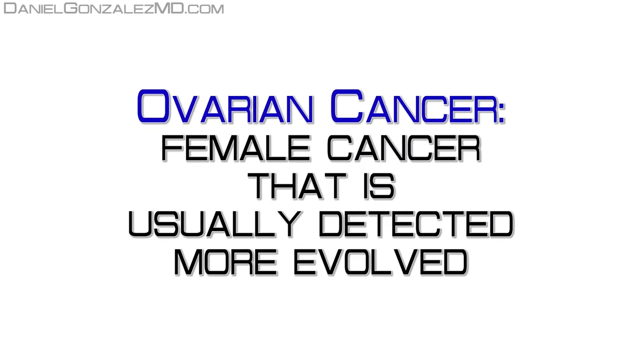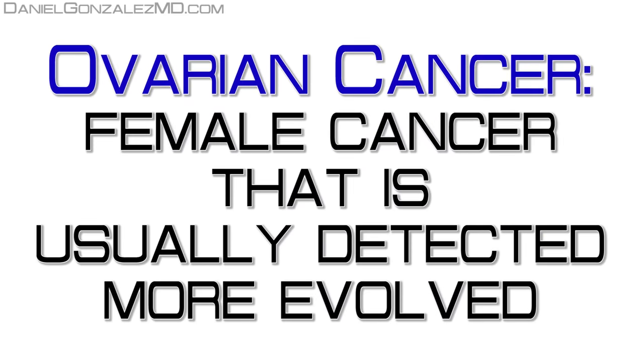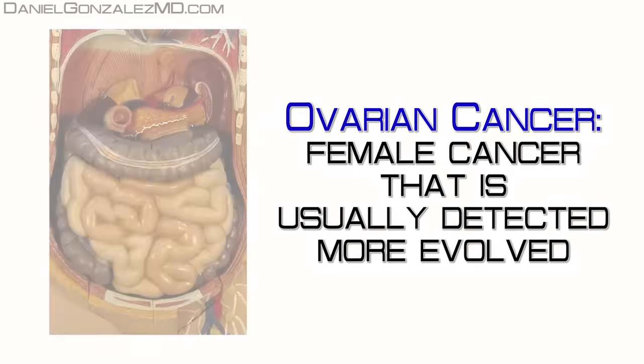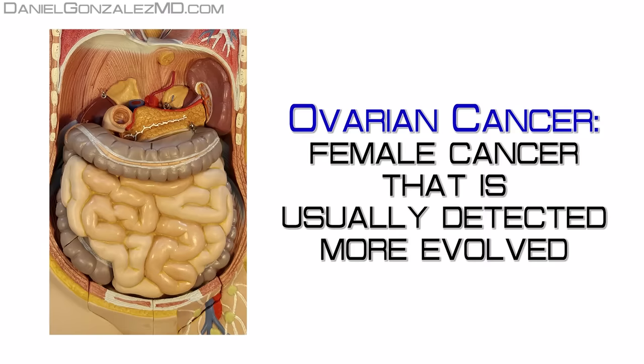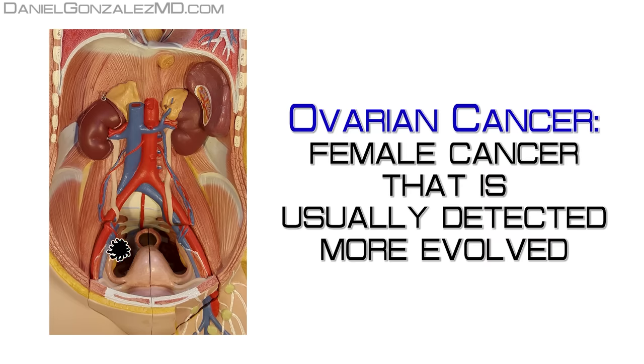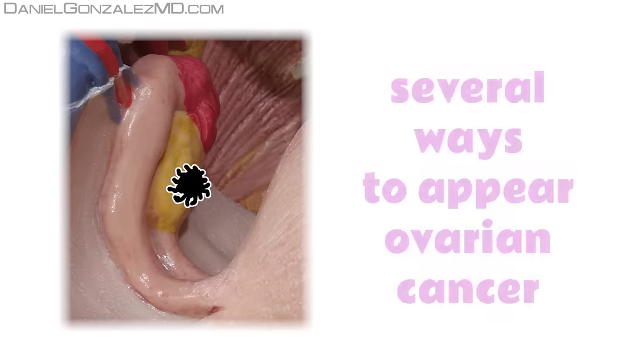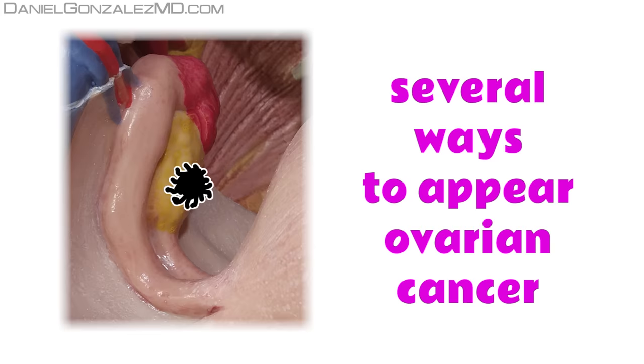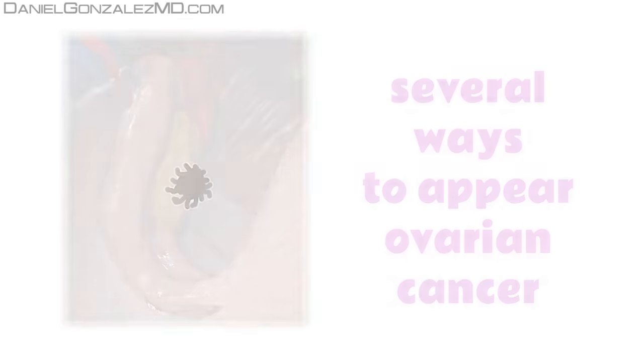This tumor is the female cancer that is usually detected more evolved, because being inside the abdomen and not causing any outward bleeding, when it causes symptoms, cancer is usually very big. If cancer is limited to the ovary, there may be several ways to appear. Let's see them one by one.